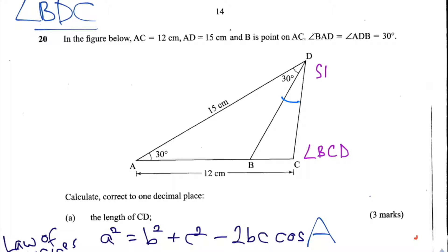Question 20D asks us to find the angle BDC correct to one decimal place. To do this we're going to have to use the sine law which is sine A over A is equal to sine B over B.